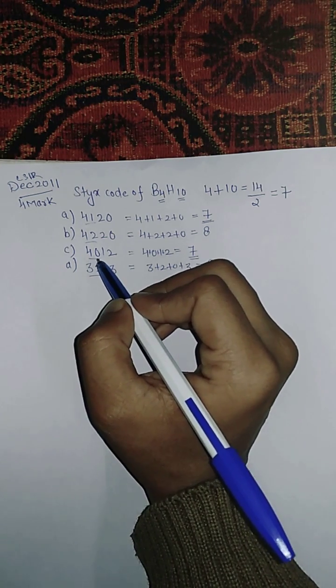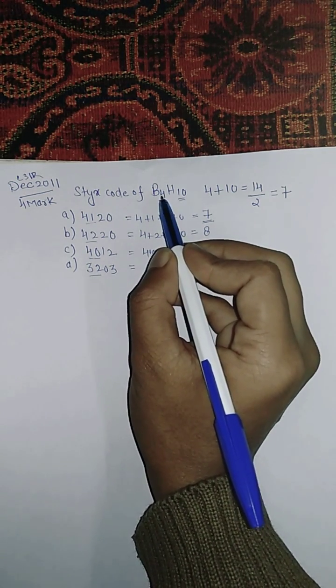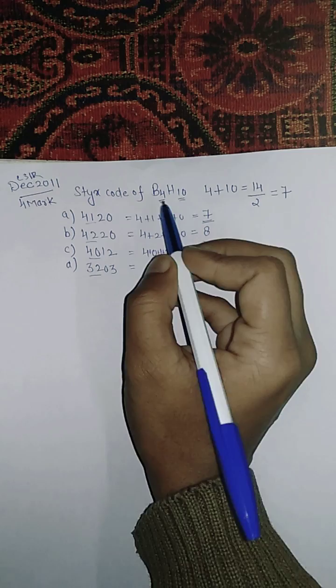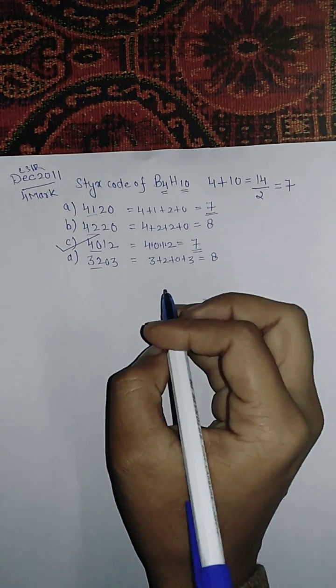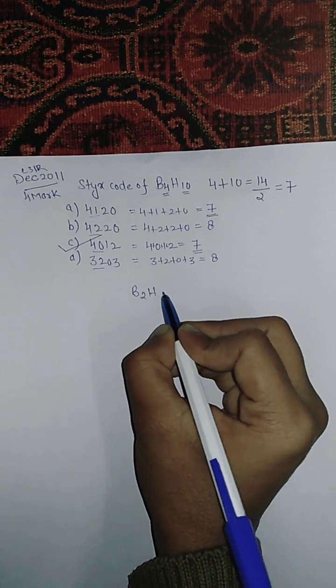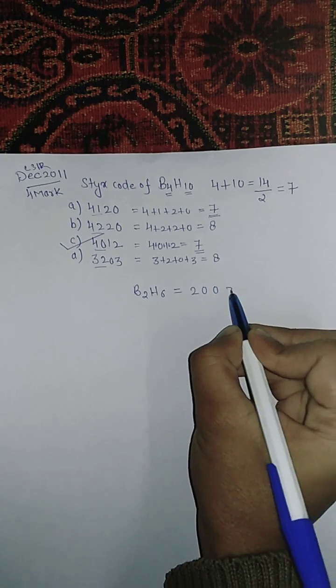I'll take one more example: B2S6. Here the SETX code is 2,0,0,2. The sum of the first two numbers is 2, which equals the number of boron atoms.